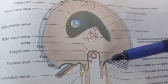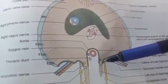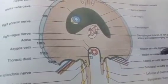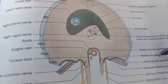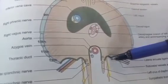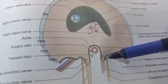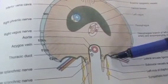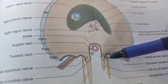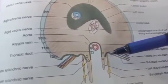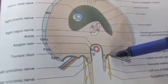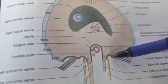The medial lumbocostal arch is also known as the medial arcuate ligament. It is a tendinous arch in the upper part of the fascia covering the psoas major muscle. Medially, it is attached to the body of L1 vertebra, and laterally to the transverse process of L1 vertebra.